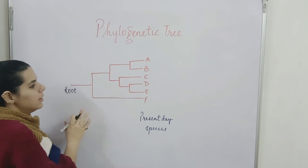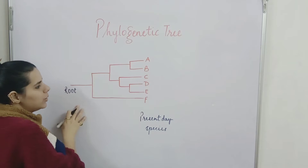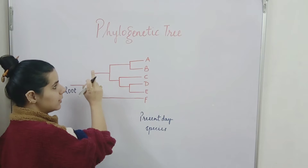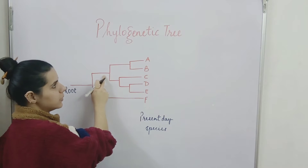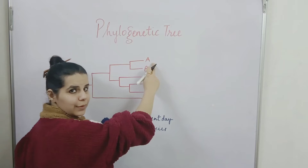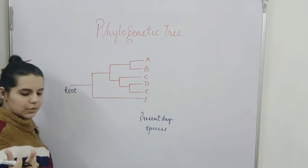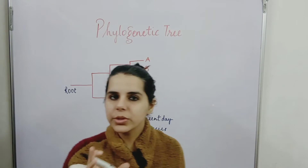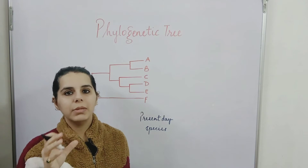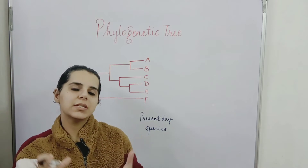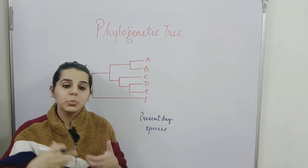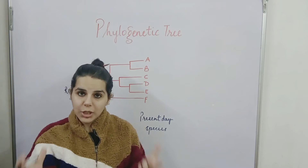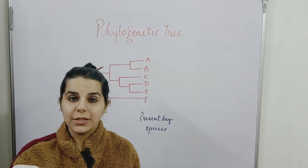Similarly, if I want to move forward — say I'm standing at a point and want to trace the evolutionary pathway to species A — I can do that with the phylogenetic tree. These phylogenetic trees are basically a hypothesis, made on the basis of the data available. As more data becomes available, the shape of the tree changes accordingly.